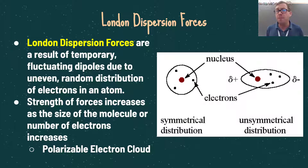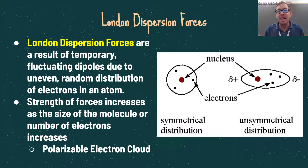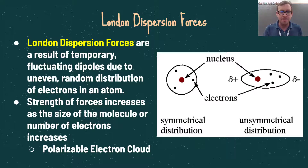The strength of London dispersion forces increases as the size of the molecule or the number of electrons increases. Smaller atoms or molecules will have fewer London dispersion forces than larger molecules because they have fewer electrons, creating a smaller temporary dipole. Larger molecules can create larger temporary dipoles or multiple temporary dipoles, thus increasing the London dispersion forces. The rationale for this is what's known as a polarizable electron cloud — larger molecules have larger polarizable electron clouds with more electrons.